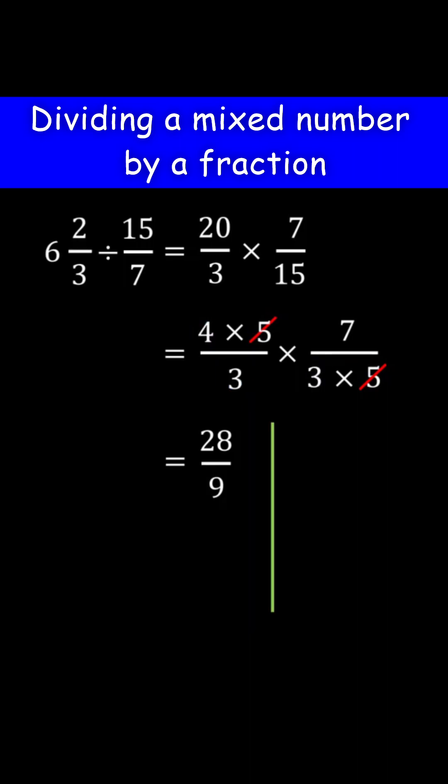Because 28 over 9 is an improper fraction, convert it to a mixed number. For that, divide 28 by 9. 9 goes into 28 three times. 3 times 9 is 27. 28 minus 27 is 1, which is the remainder. Therefore, 28 over 9 in mixed number form is 3 and 1 over 9. Therefore, this is the answer.